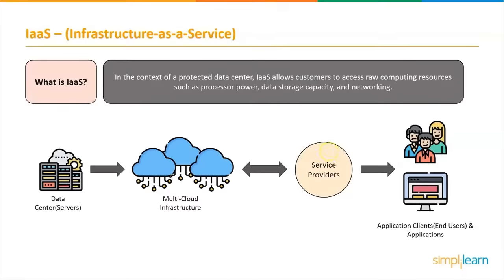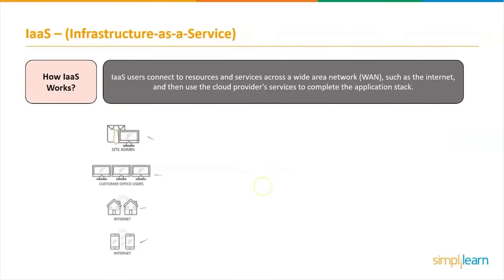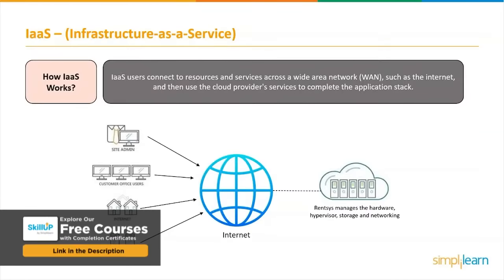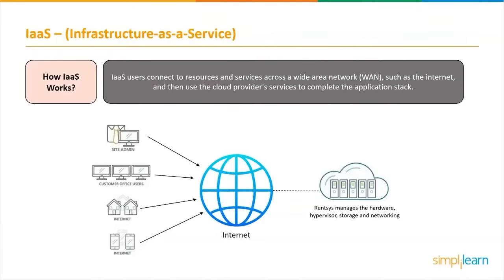How does IaaS work? Users connect to resources and services across a wide area network such as the internet and use the cloud provider services to complete the application stack. The user can log into the IaaS platform to build virtual machines, install operating systems in each VM, deploy middleware such as databases, create storage buckets for workloads and backups, and install the enterprise workload onto that virtual machine. Customers can then track cost, monitor performance, balance network traffic, solve application difficulties, and manage disaster recovery using the provider services.